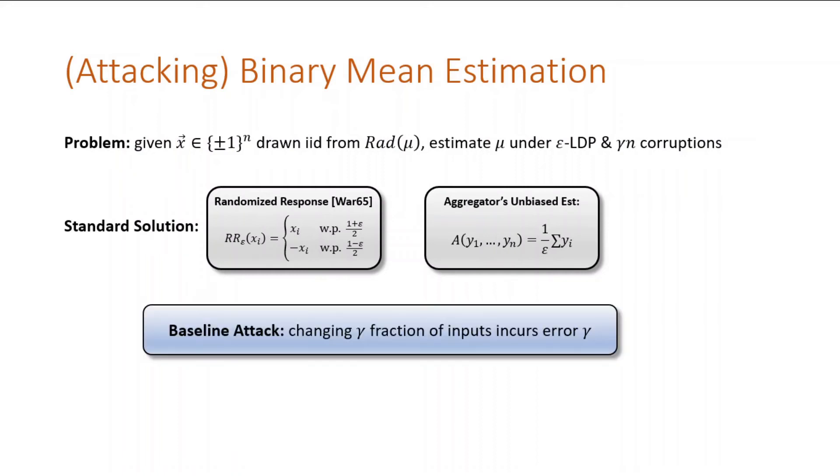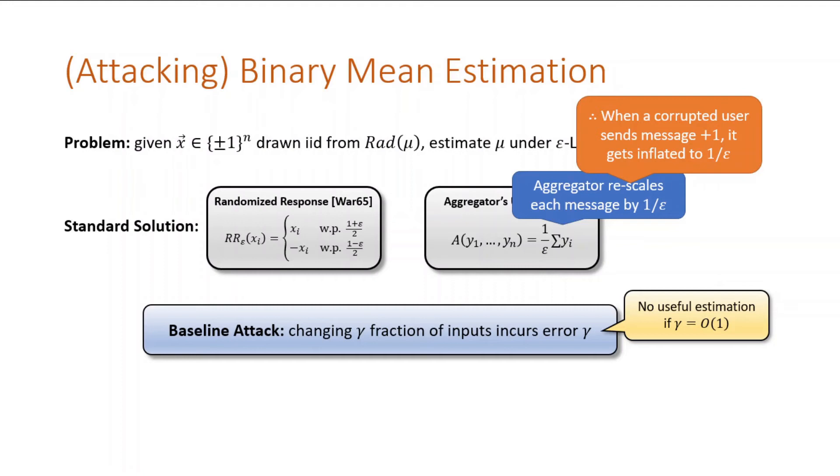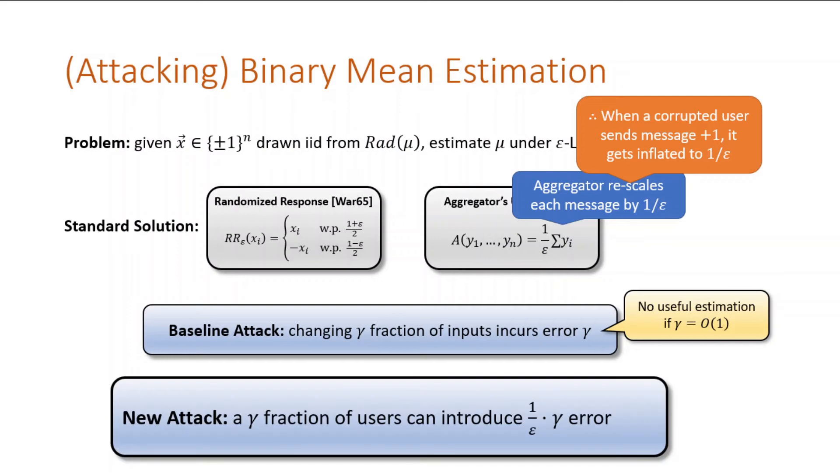A baseline attack is to just change the inputs to the randomizer. This incurs error gamma, so no useful estimate if gamma is large, like one-half. But notice that this aggregator is rescaling by epsilon. This means that when a corrupted user sends a message that is fixed to be plus one, it gets inflated to one over epsilon. That means a gamma fraction of users introduces gamma over epsilon error. So we have no useful estimate if gamma is near epsilon, not near a constant like before.